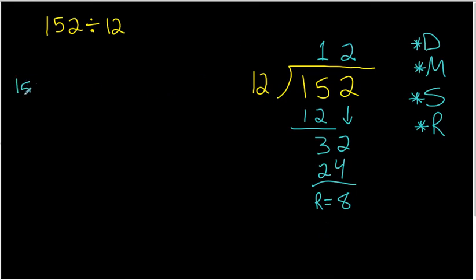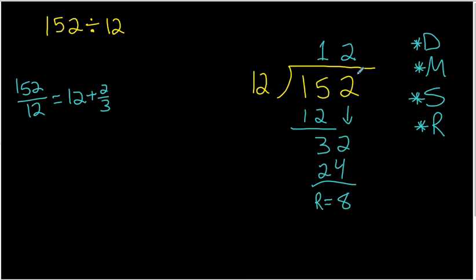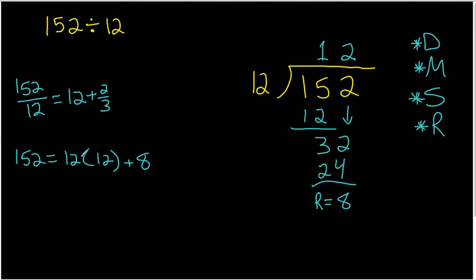There are two ways to write the answer. We can write it in quotient form: 152 divided by 12 equals our quotient, 12, plus the remainder over the divisor — plus 8 twelfths, which reduces to 2 thirds. The other way is a multiplication statement to check our division: 152 equals the divisor, 12, multiplied by the quotient, 12 — giving 144 — plus the remainder 8, since 144 is 8 short of 152. Those are the two ways to write final answers.